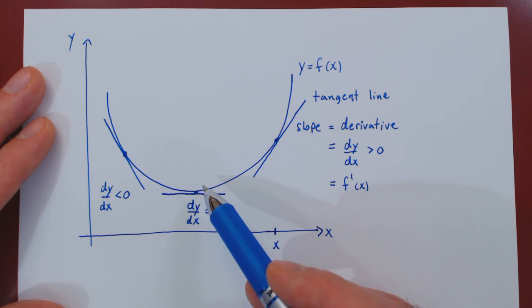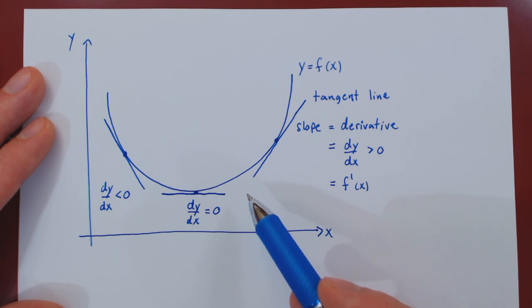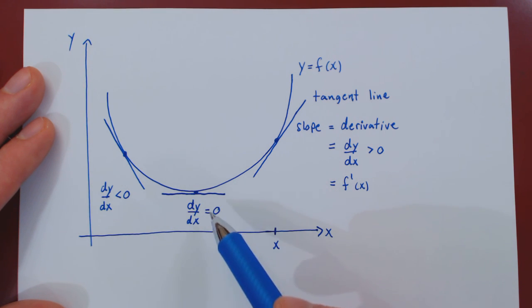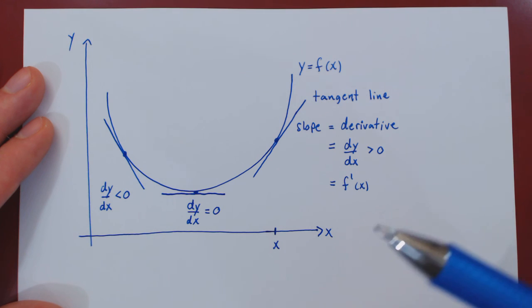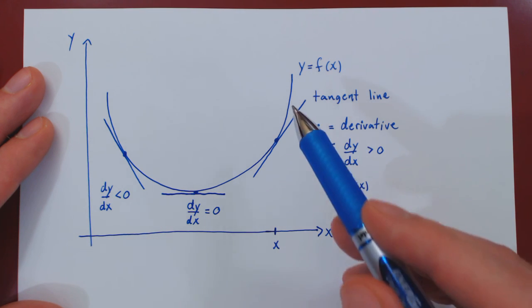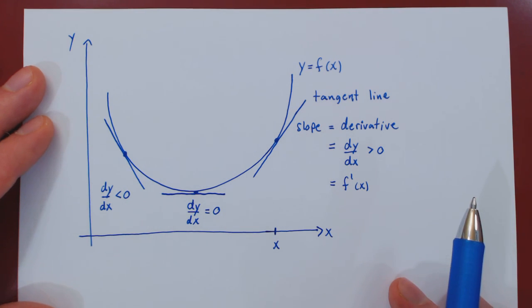And at a point where the derivative is zero, then the slope of the function, just as the slope of its tangent line, is equal to zero. So at this point the curve is flat. So we can now speak of the slope of a curve just as we would speak of the slope of a line.